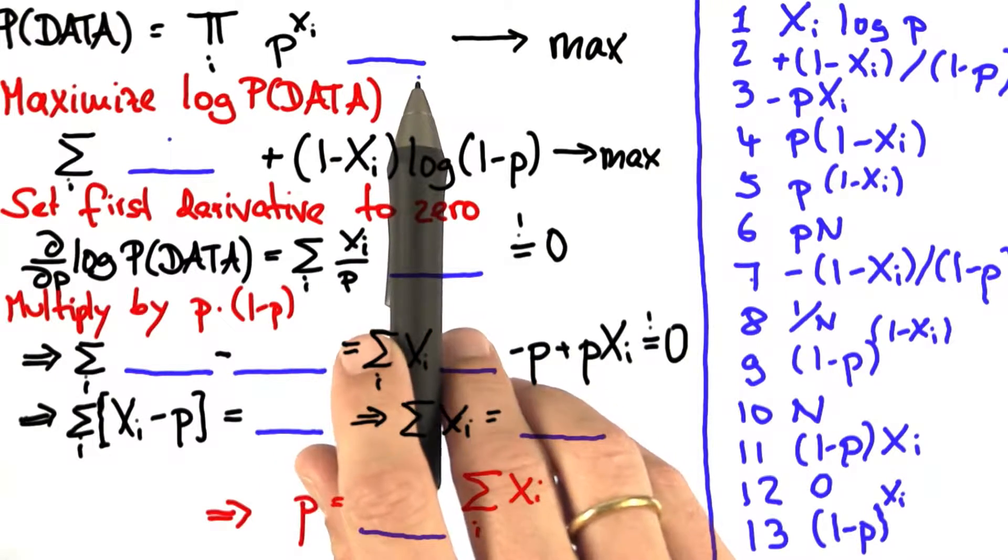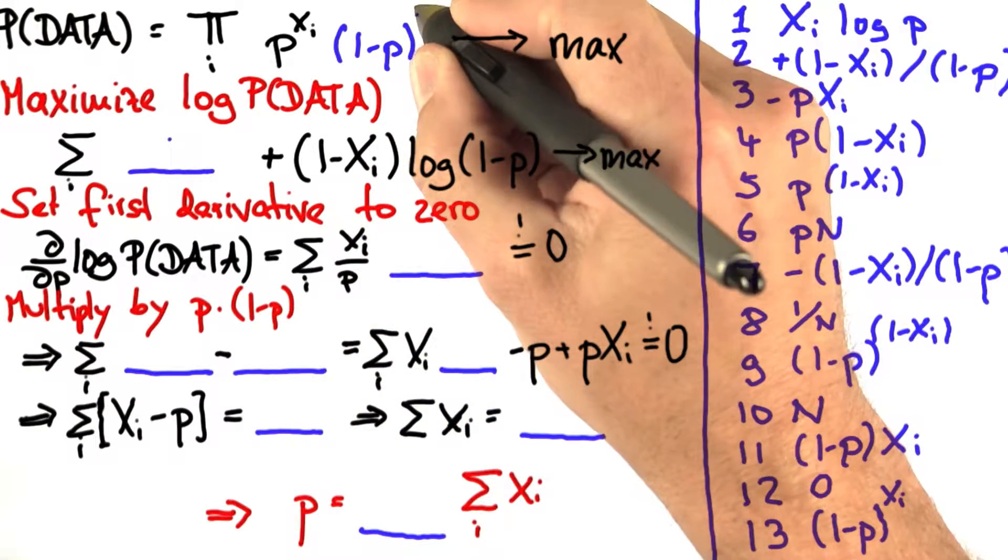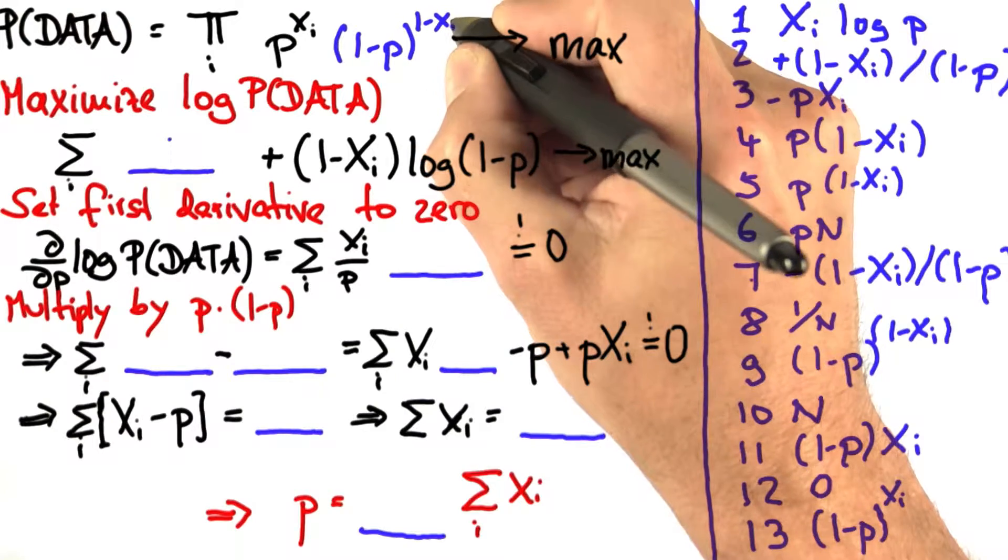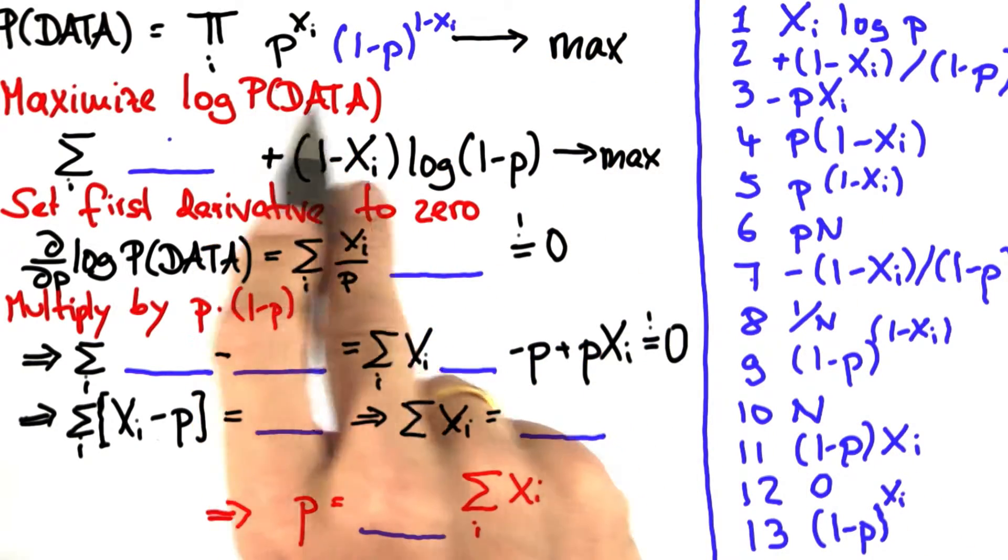The answer to the first open question is number 9: 1 minus p to the 1 minus xi. And this is actually quite remarkable.